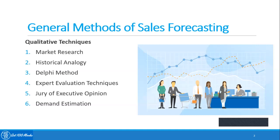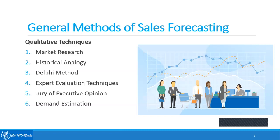Demand estimation is the process of finding current values of demand for various values of prices and other determining variables. The steps include: identification of independent variables such as price, price of substitutes, population, per capita income, and advertisement expenditure; collection of data from past records; development of a mathematical model or equation to indicate the relationship between independent and dependent variables; estimation of the parameters of the model; and development of estimates based on the model.